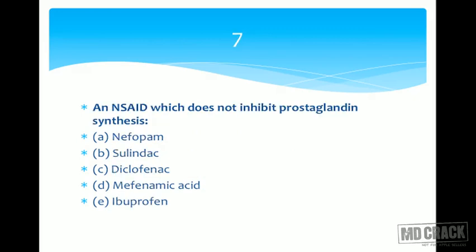Question number seven: which is an NSAID that does not inhibit prostaglandin synthesis? This is a very atypical question. Normally when we speak of NSAIDs, we say they inhibit prostaglandin synthesis and are anti-inflammatory drugs. Options are: A nifopam, B sulindac, C diclofenac, D mefenamic acid, and E ibuprofen.